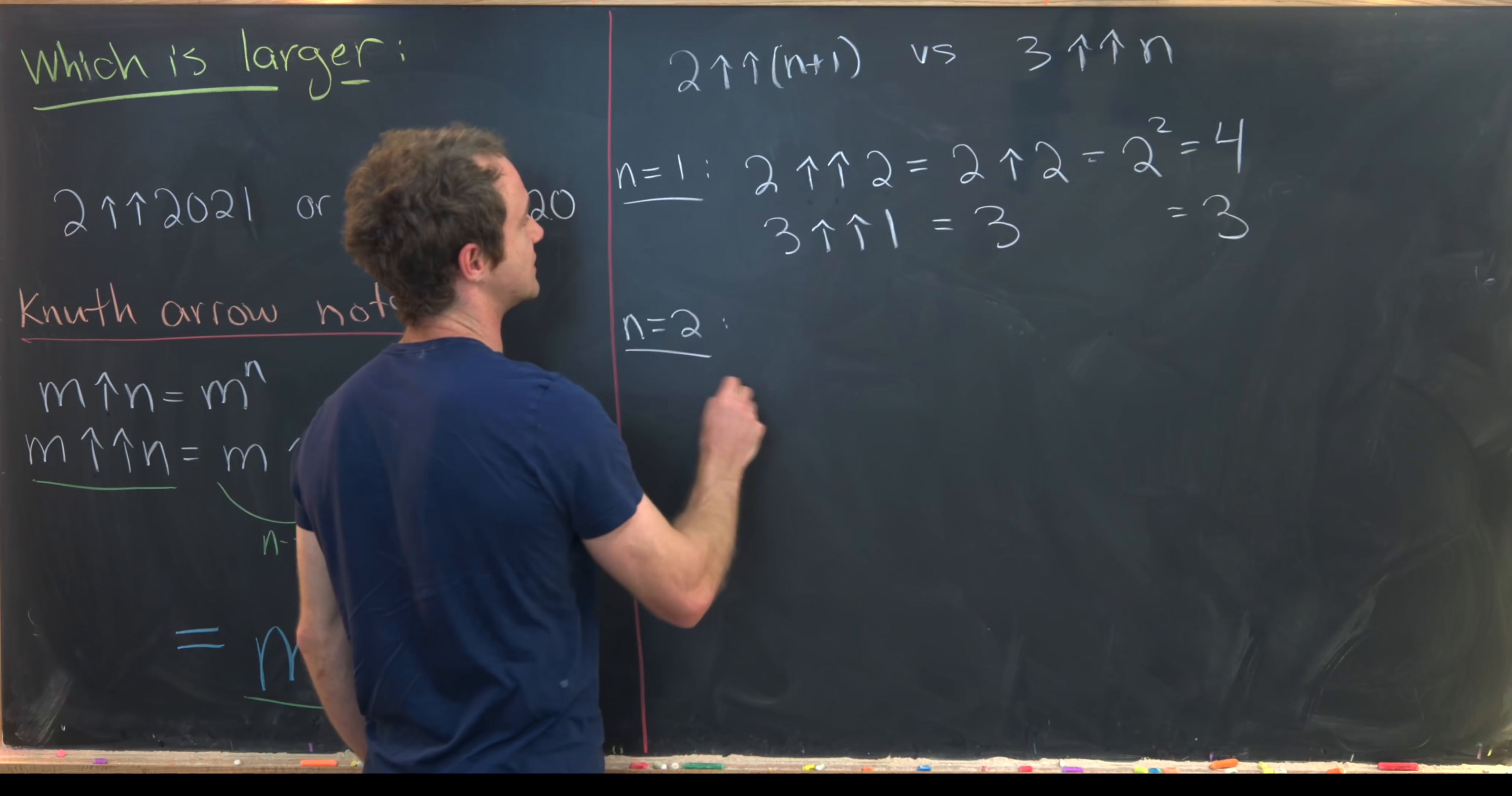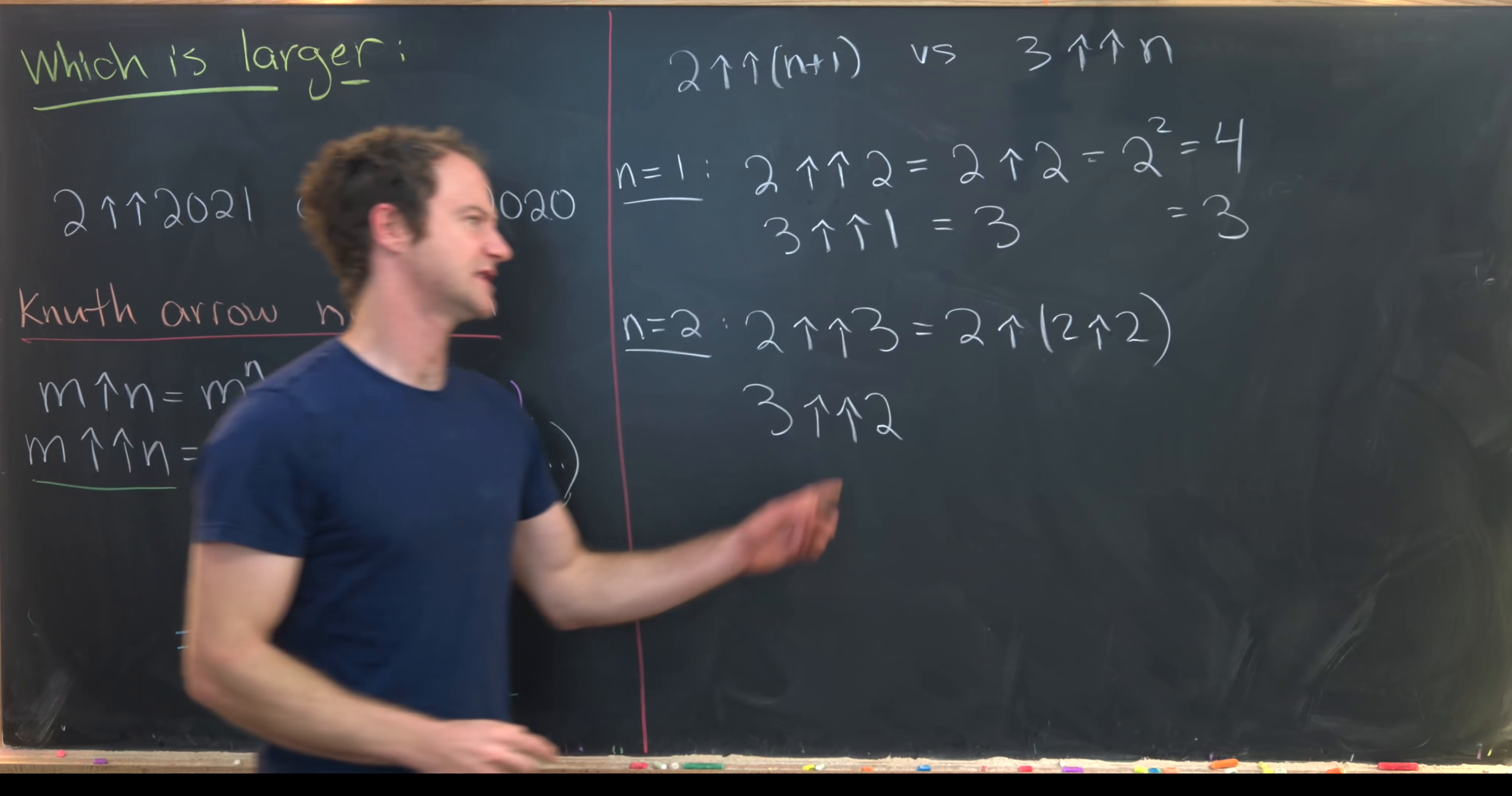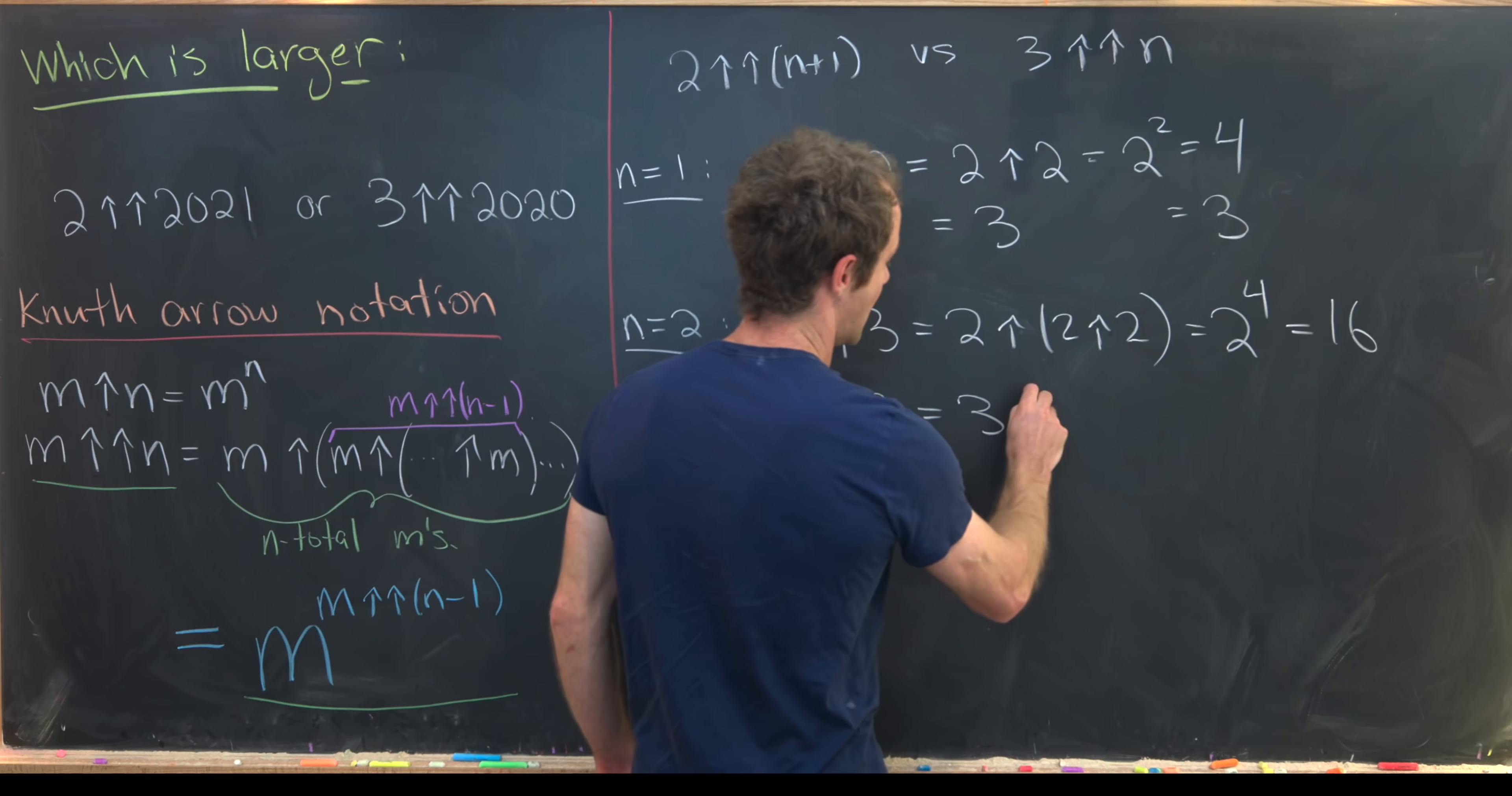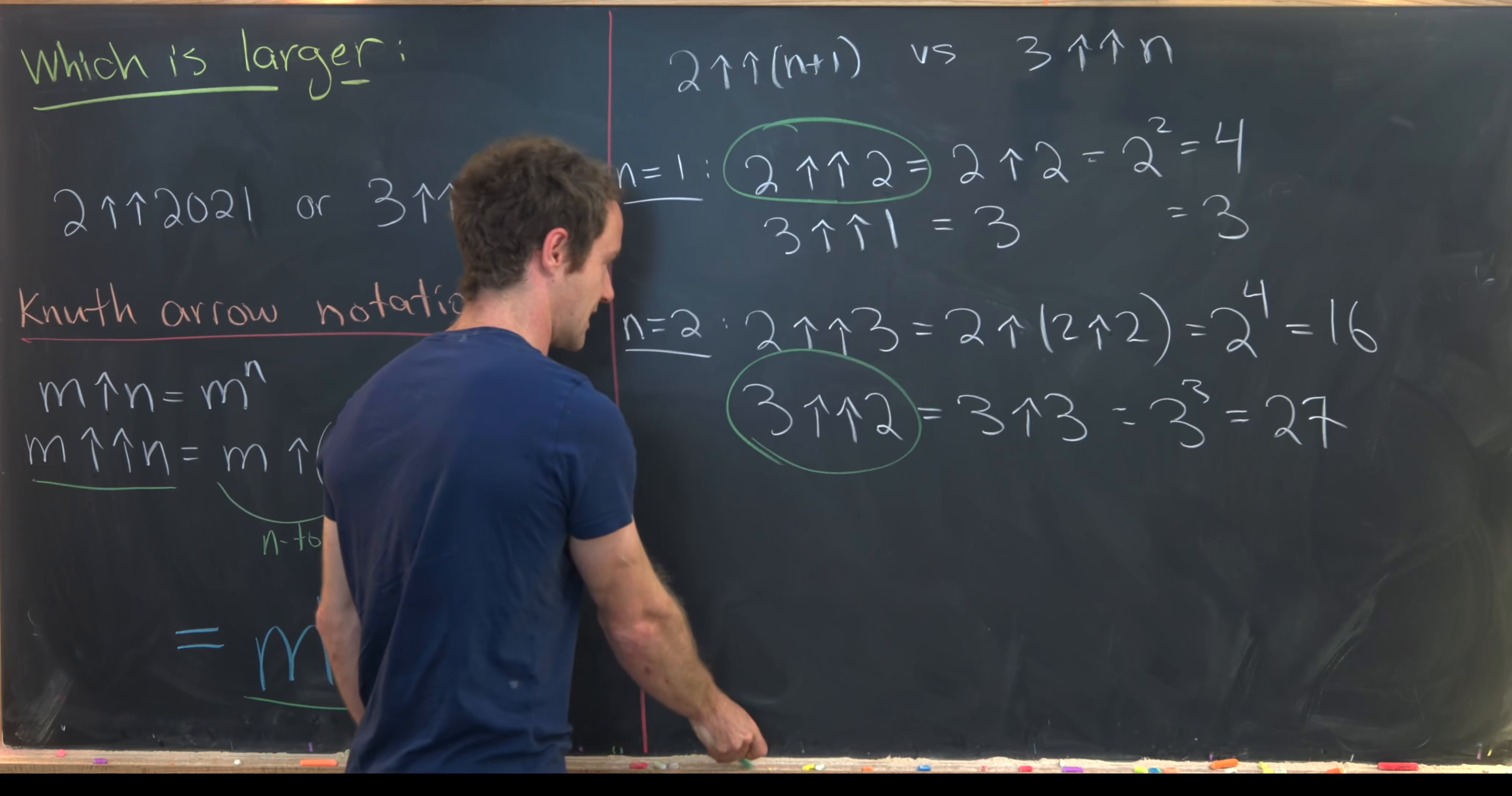Let's look at the n equals 2 case. So that's going to be 2 double up arrow 3 versus 3 double up arrow 2. Okay so this guy right here is going to be 2 up arrow 2 up arrow 2. But let's recall that that's going to be the same thing as 2 to the 4 because this guy right here is 4 but that is 16. But what is this? This is going to be equal to 3 up arrow 3 by the definition of the double up arrow. But that's going to be 3 to the 3 which is 27. So in this case the 3 double up arrow 2 wins. Whereas in this case the 2 double up arrow 2 wins.